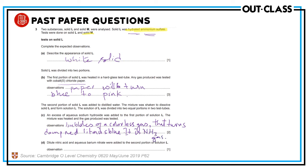Complete the observation of the gas, the test for the gas, and its identification. Dilute nitric acid and barium nitrate is again the test for the sulfate ion, so we'll see a white precipitate.